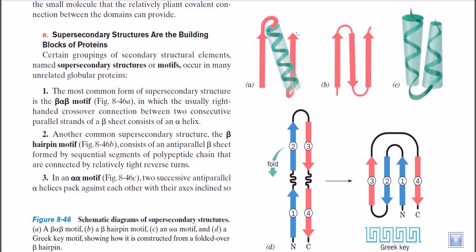Inside globular proteins, anti-parallel beta strands are most commonly found because maintaining them is easy and they provide very good structural integrity to the protein. But when we have parallel beta strands, crossovers are needed, and in those cases an alpha helix is generally present between two beta strands to link them together, producing the beta-alpha-beta motif.